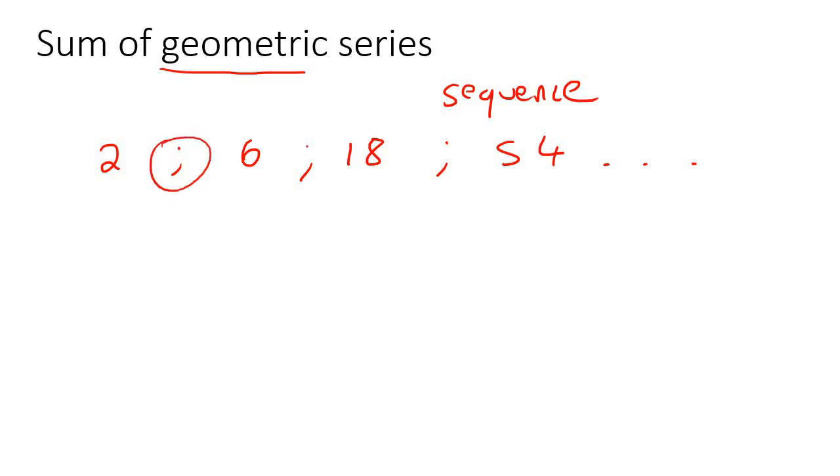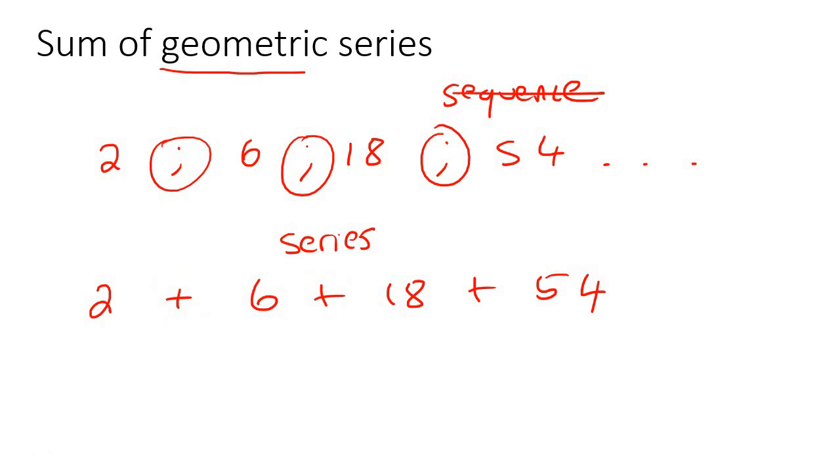It's called a sequence because we're separating it with semicolons. However, if I then had to go 2 plus 6, plus 18, plus 54, then all of a sudden, we no longer call it a sequence, now we call it a series. So a series is when you are separating it with pluses instead of semicolons, and then the geometric is because we are multiplying by the same amount to get from one number to the next.